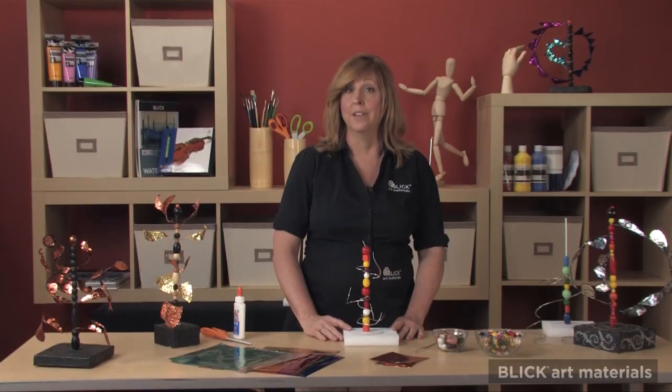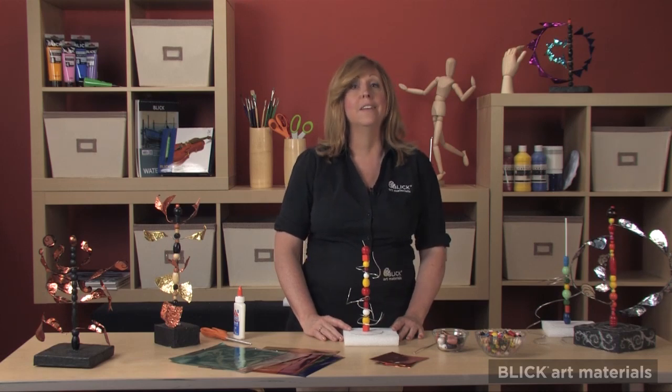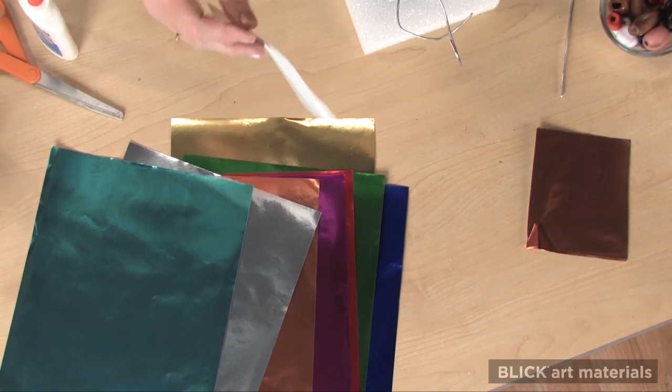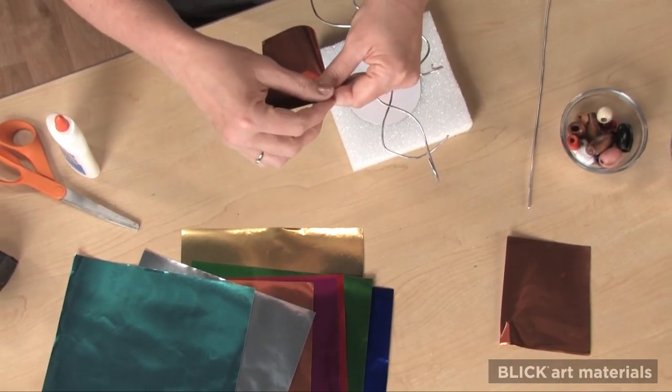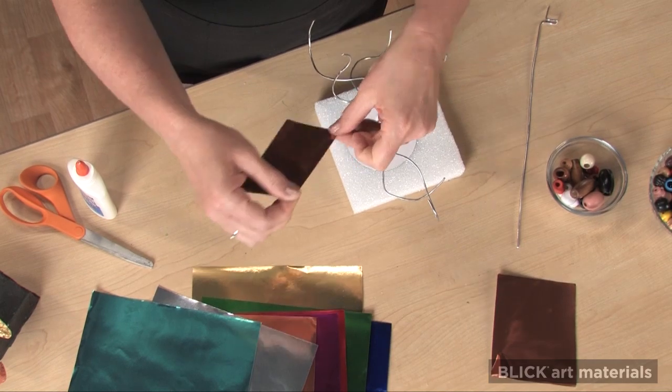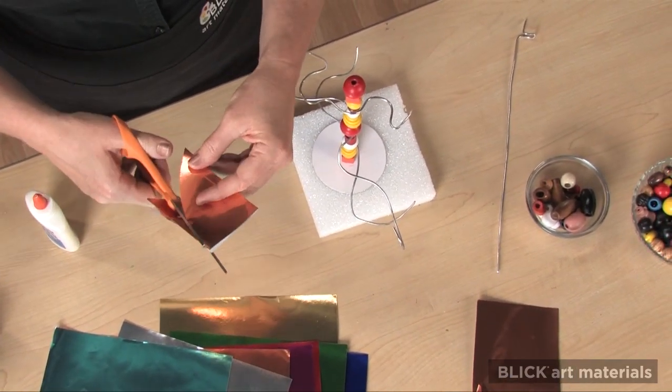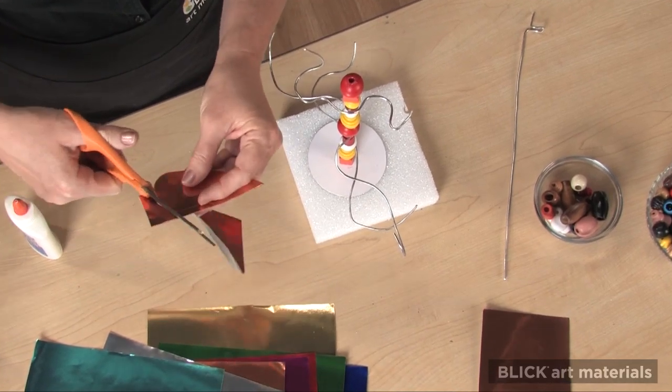The last step is to create the sails. A variety of lightweight paper could be used. I like foil paper because it's easy to bend around the wire and can be reshaped later. To make a sail, I fold it and cut a shape so that I have two matching sides.